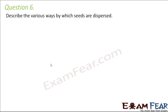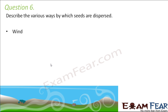Question number 6: Describe the various ways by which seeds are dispersed. Seed dispersal refers to the transfer of seeds from the parent plant — the plant which produces seeds — scattered away to different places. It can happen through various agents like